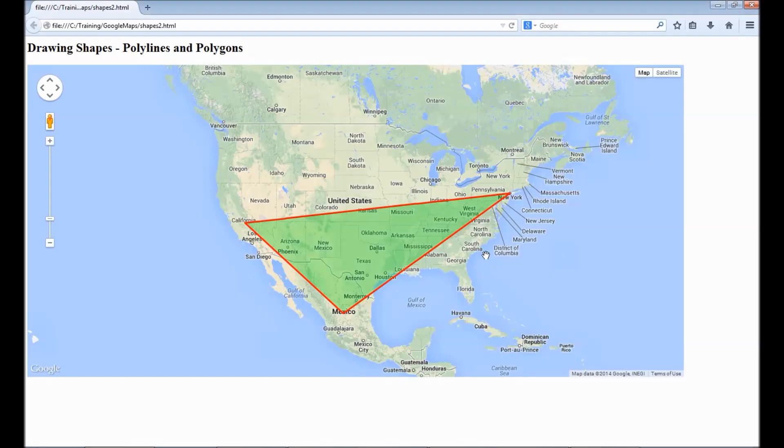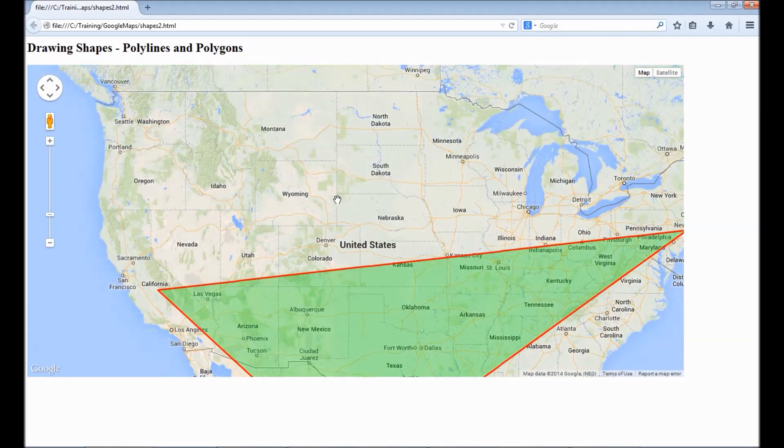Polygons are useful to represent a shape say it can be any shape it's no need to be a rectangle or a triangle you can set any number of coordinates and it draws a line basically that's what is used to draw the state's boundary city boundaries.